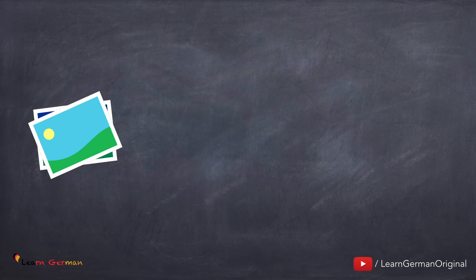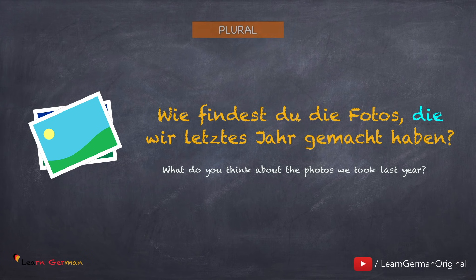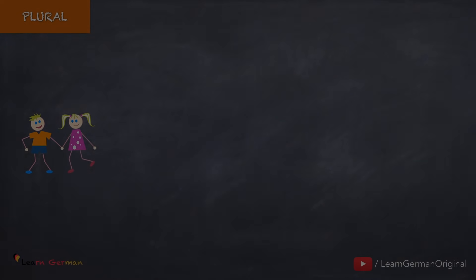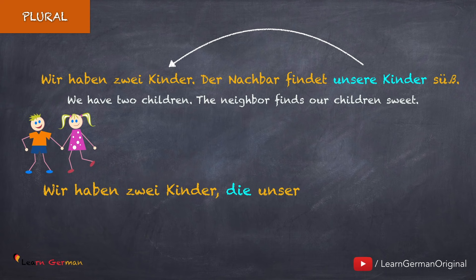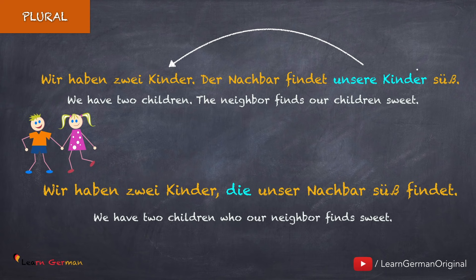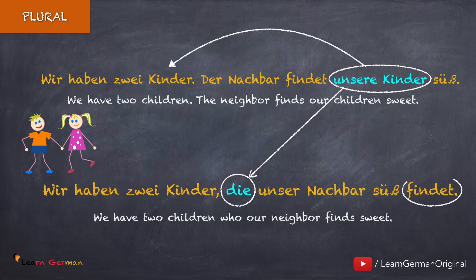Und hier sind Beispiele für Plural-Artikel im Akkusativ: Wie findest du die Fotos, die wir letztes Jahr gemacht haben? Hier ist noch eins: Wir haben zwei Kinder — der Nachbar findet unsere Kinder süß. Der Nachbar ist das Nominativsubjekt und unsere Kinder sind das Akkusativobjekt. Im Relativsatz benutzen wir die als Relativpronomen für Plural: Wir haben zwei Kinder, die unser Nachbar süß findet. Das Verb steht am Ende.